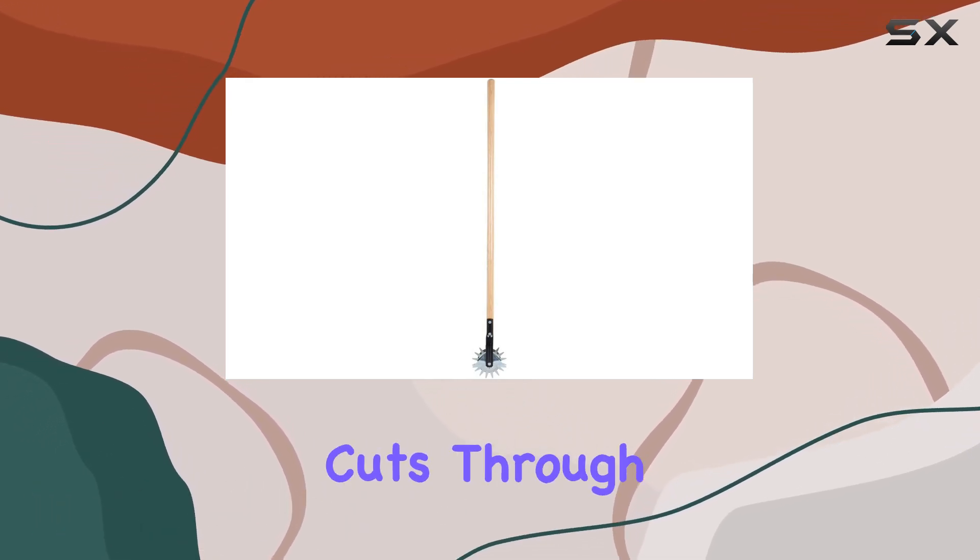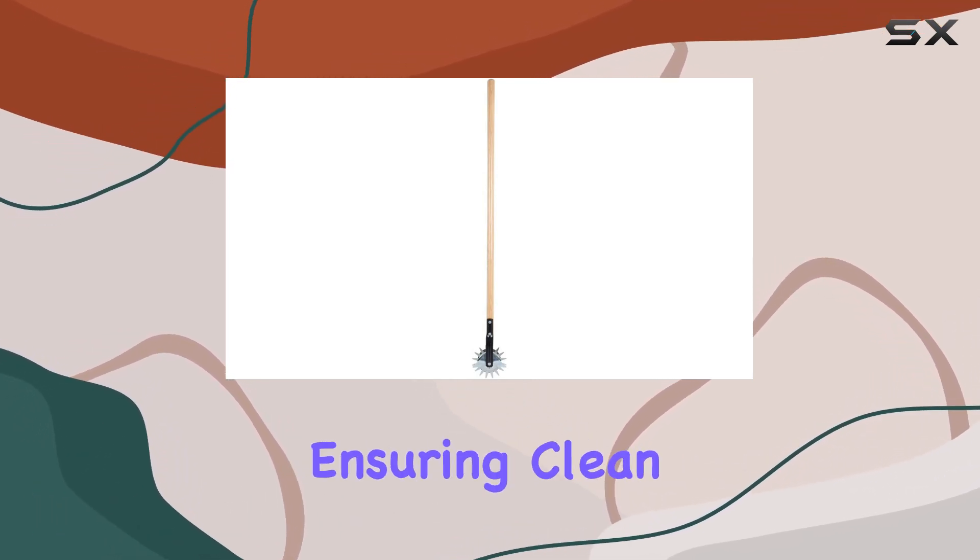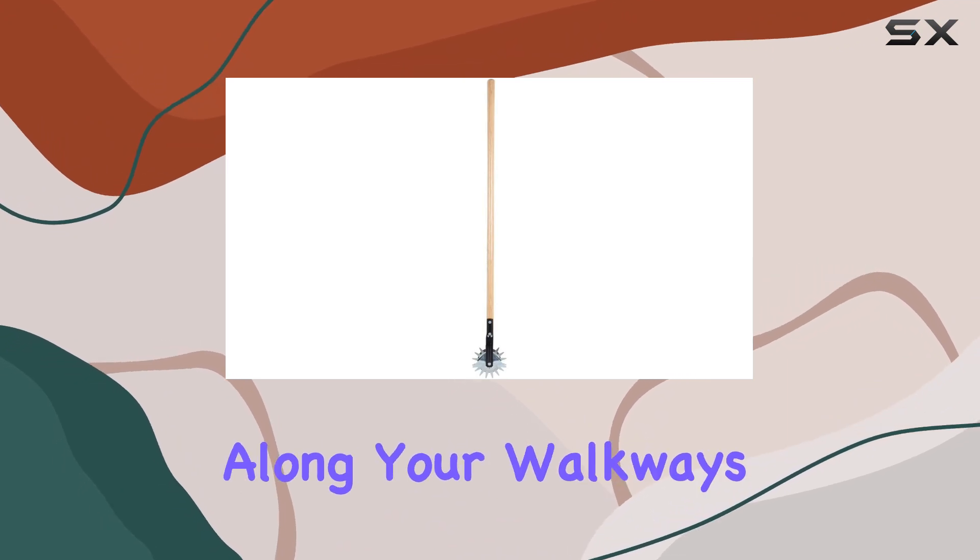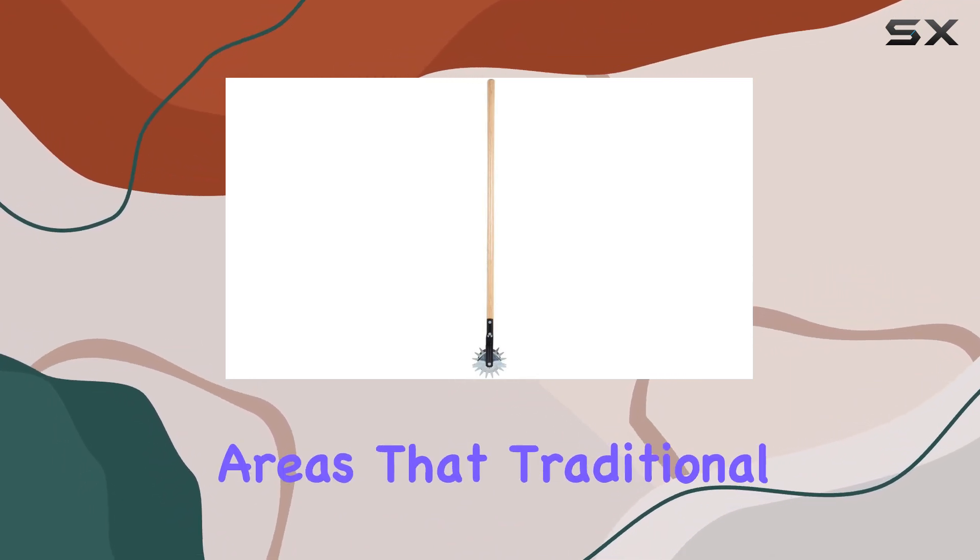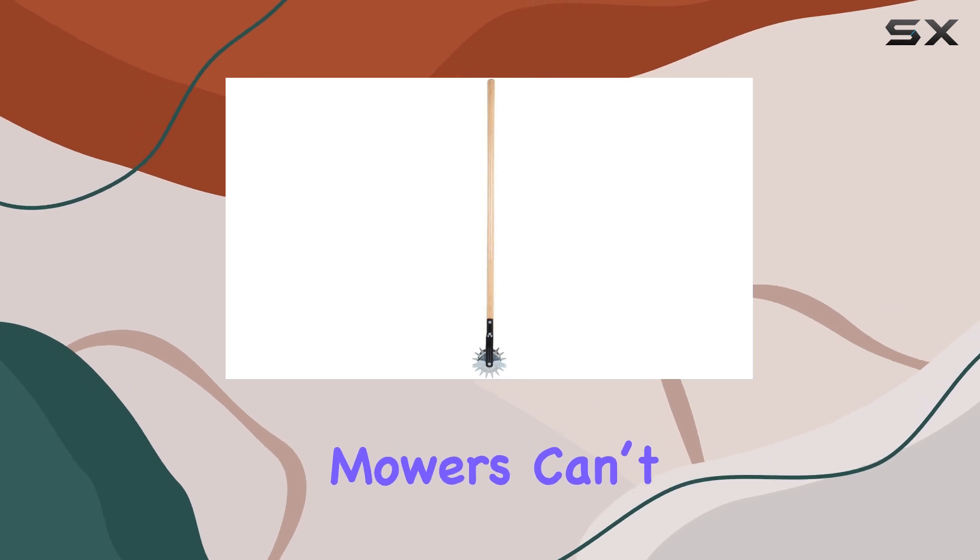The sharp blade effortlessly cuts through overgrown grass, ensuring clean and crisp edges along your walkways, driveways, and flowerbeds. It reaches areas that traditional mowers can't.